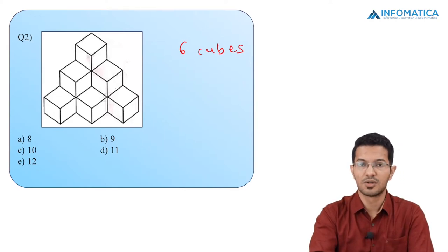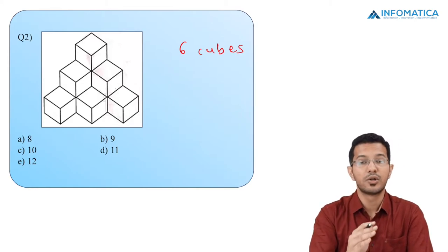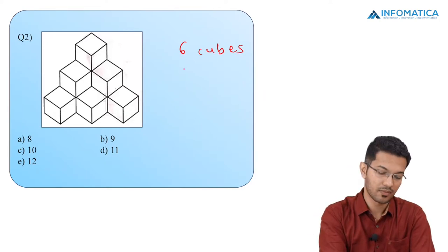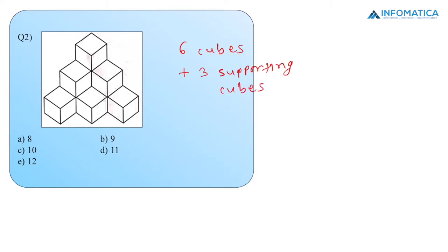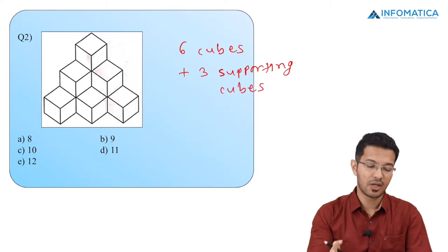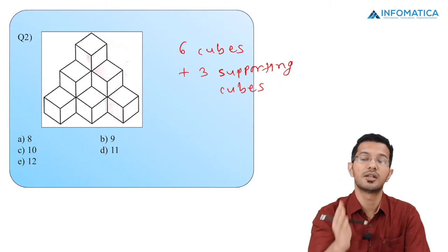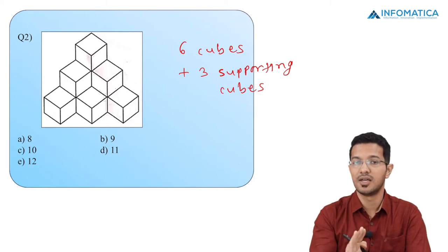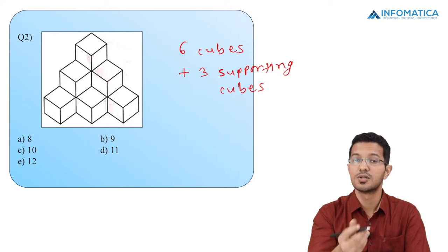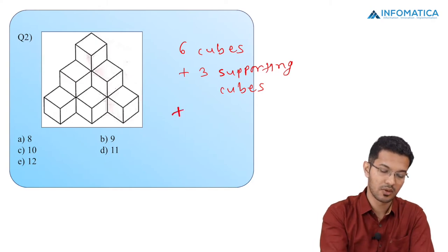Looking at the bottom floor, I can see 3 cubes, and the 2 cubes on top are being supported by 3 cubes, so I will write 3 supporting cubes. Now on the second floor, there is 1 missing hidden cube, and that hidden cube is supporting the cube on top — the one I cannot see. So I will write down 1 missing cube and 1 supporting cube.